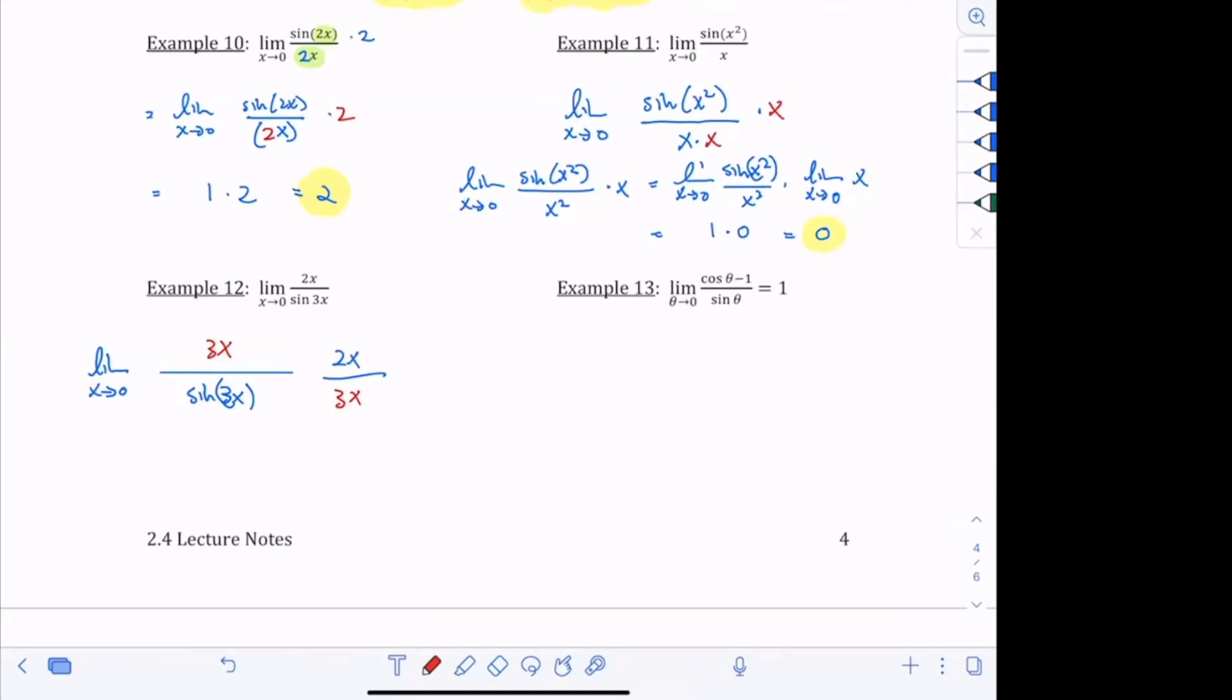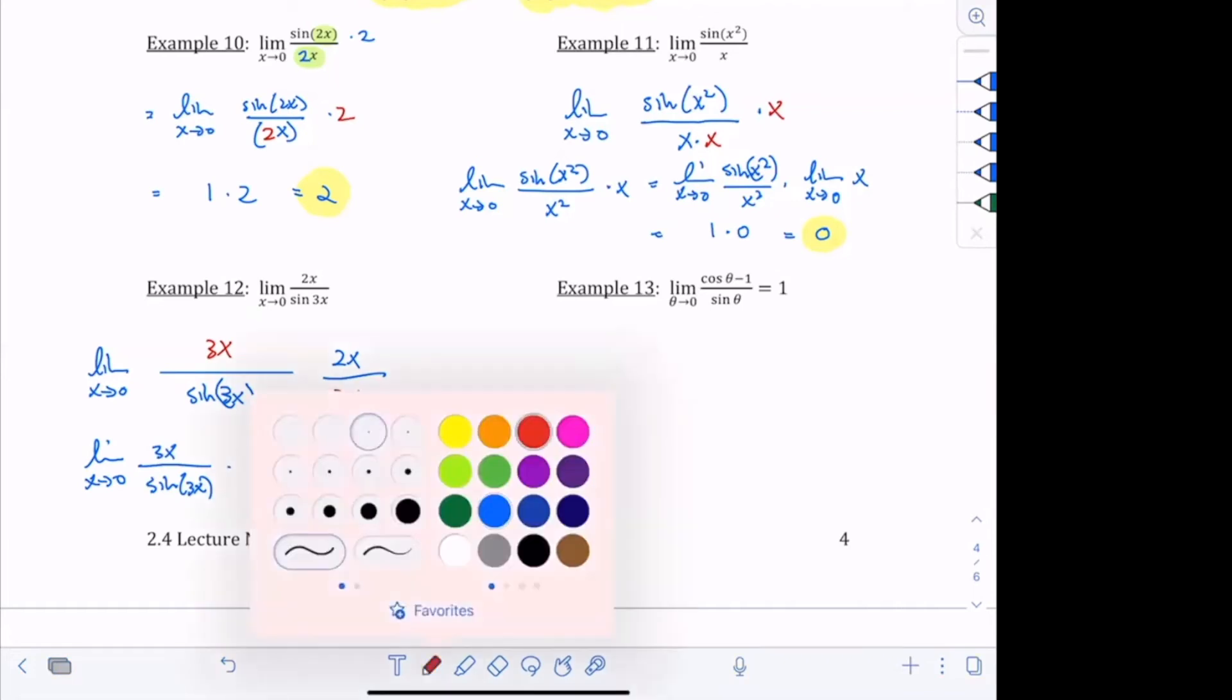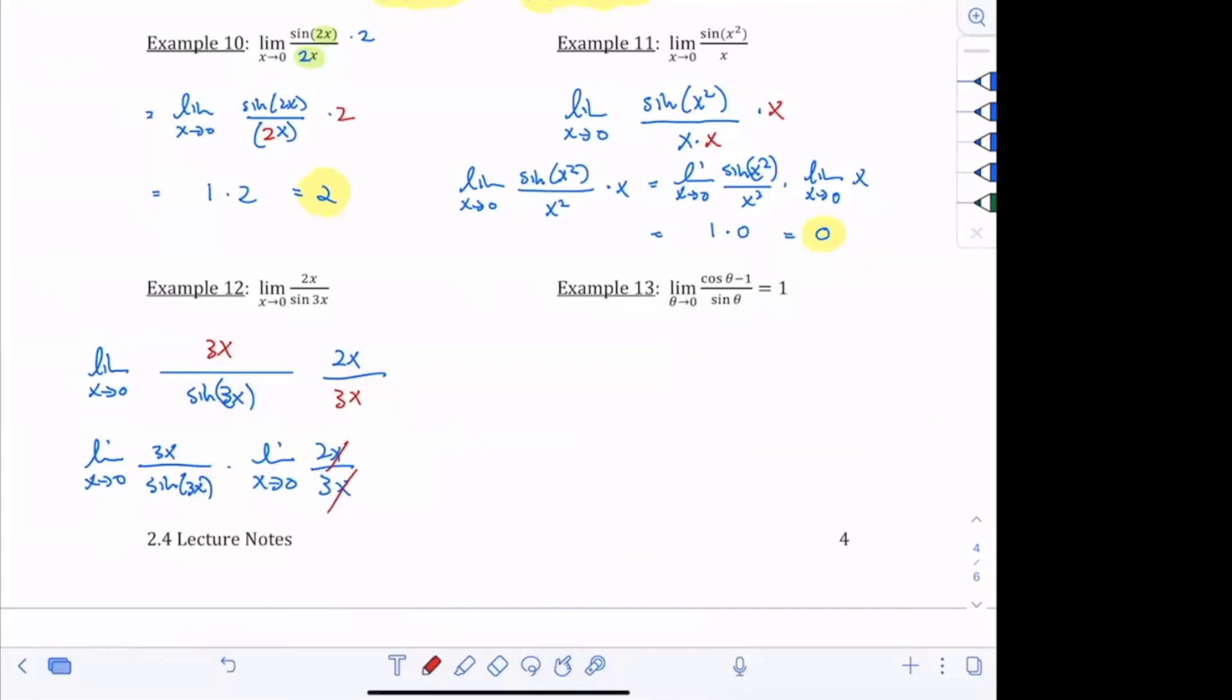Then what do we have? This is the limit as x goes to 0, 3x over sine 3x times the limit as x goes to 0. This is 2x over 3x. But I hope you guys can see that the x's here cancel out. And this part goes to 1. So in the end, we're just going to have 1 times 2 thirds, which is equal to 2 thirds. Does that make sense for everybody?